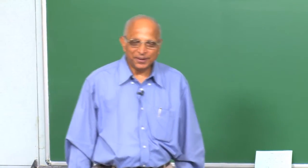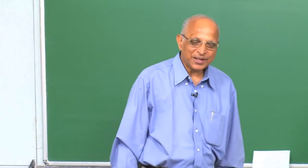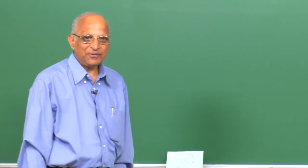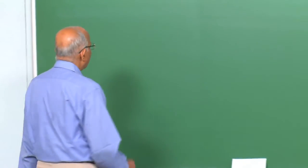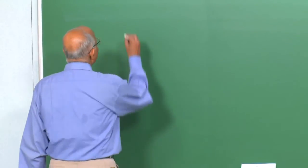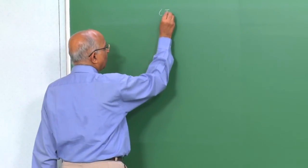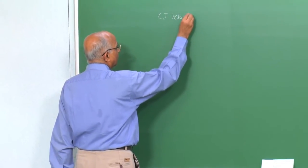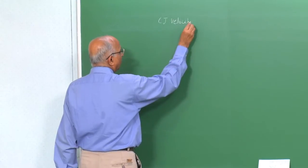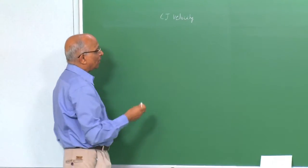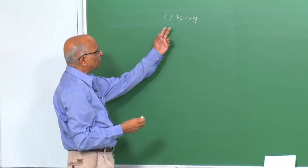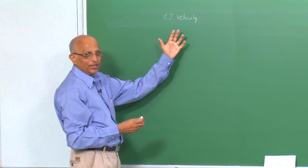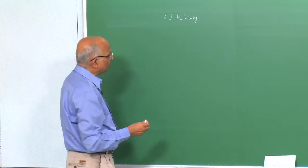Good morning. In today's class we continue with what we derived yesterday. You will recall we derived an expression for the Chapman-Jouguet velocity of a detonation. We said that the Chapman-Jouguet velocity corresponds to the steady state velocity, or the constant velocity, with which a detonation proceeds.